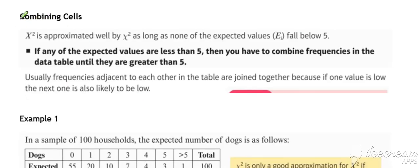The next detail to consider is sometimes we need to combine cells, because the chi-square distribution is only a good approximation to the goodness of fit if none of the expected values fall below five. So if any of the expected values do fall below five, we must combine frequencies in the table to ensure that they are greater than five. This is demonstrated in the example below.